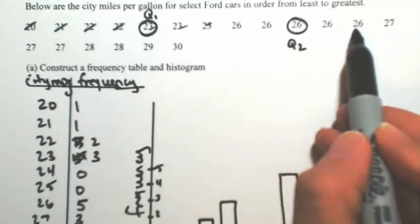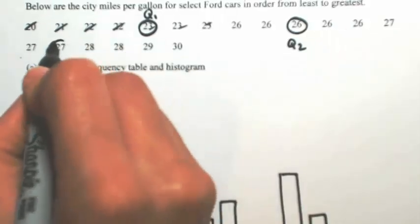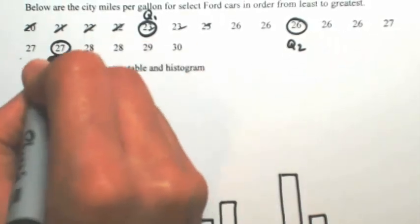Same thing on the right side: 1, 2, 3, 4, 5, 6, 7, 8, 9 numbers. So 1, 2, 3, 4, 5 is going to be Q3, so 27.